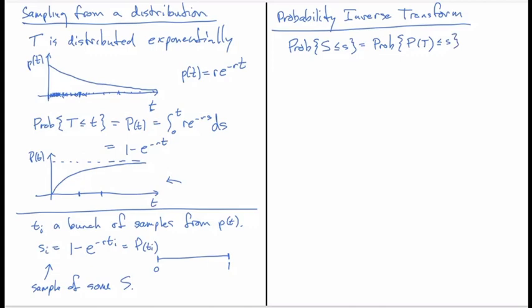Now, because capital P is this one here, is a monotone function, we can invert it. So this is equal to the probability of t being less than or equal to P inverse of s. It's monotone increasing, so the inequality stays the same way. And then this expression is exactly capital P of P inverse of s. That's how we defined P: it's the probability that capital T is less than some particular number. In this case, that particular number is P inverse of s. Now P of P inverse of s is exactly s.